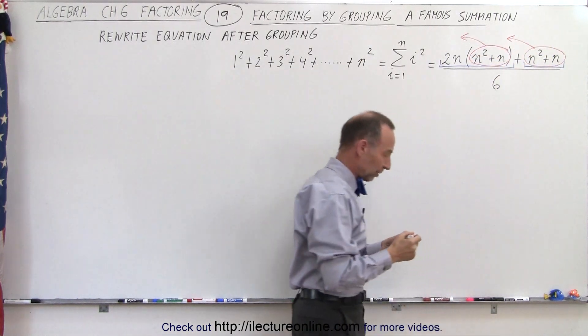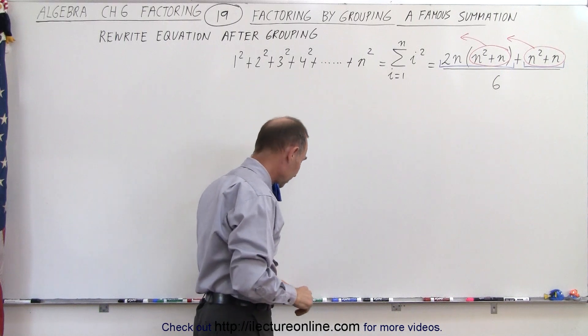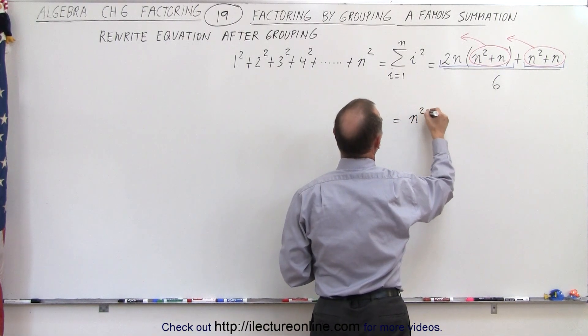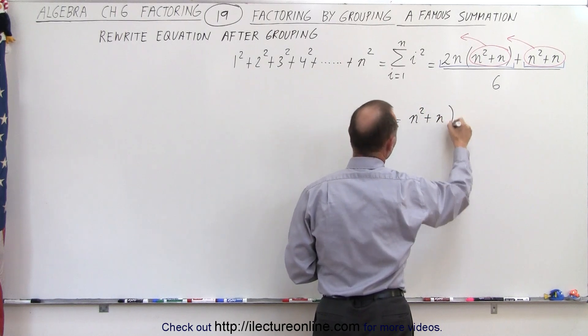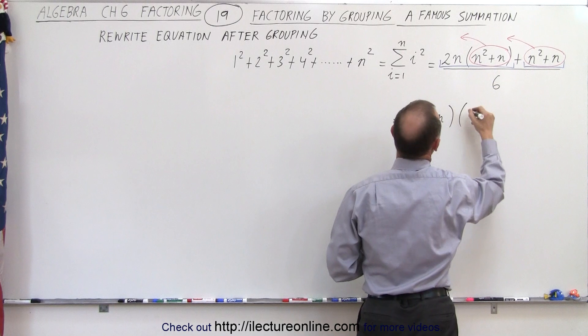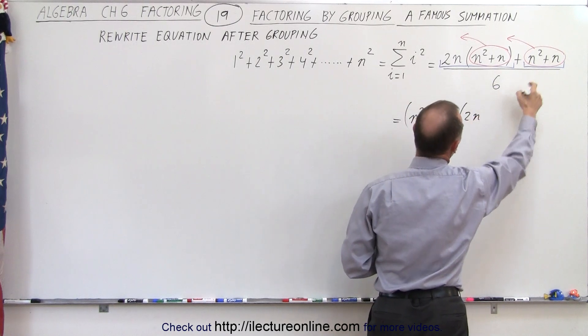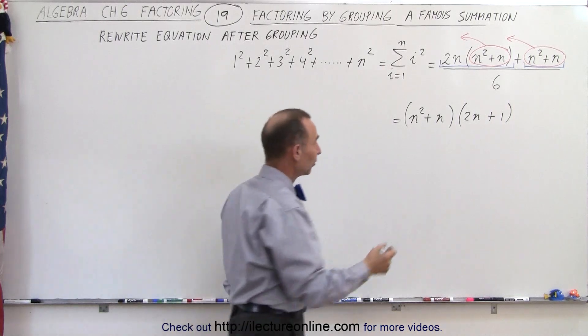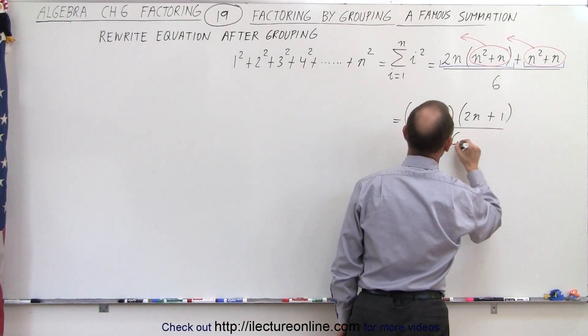So this can now be written as n squared plus n multiplied times... On the first term, I have 2n left, and on the second term, I simply have a plus 1 left. Of course, I still have divided by 6.